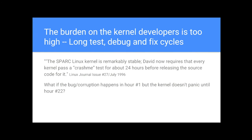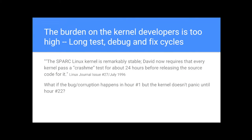On helping devs: I read that Crash Me used to be required to run for 24 hours as part of the Linux release process. What if corruption happens in the first hour but the panic occurs 20 hours later? It'll take a huge log from DTrace to capture, you've already got a 24-hour cycle to run again to see if it happens — that's a lot of work.